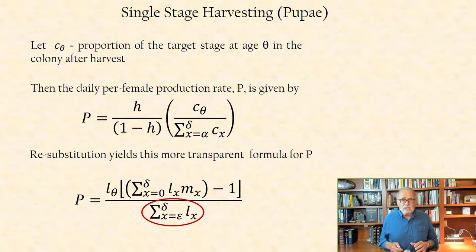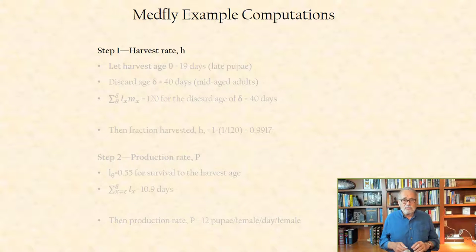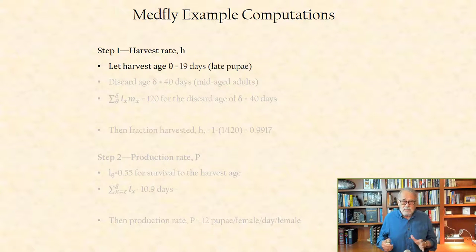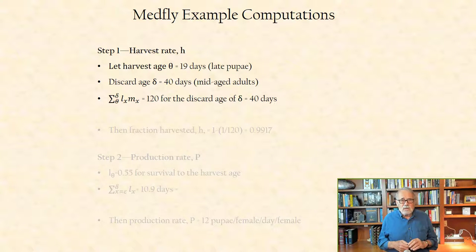Using the medfly example, determination of the harvesting parameters requires two steps. Step 1, the harvest rate H. Using a harvest age of theta equal 19 days, that is, late pupae, and discard age delta of 40 days, which would be mid-age adults, and a net reproductive rate of 120 at discard age, then the fraction harvested H equals 0.9917.